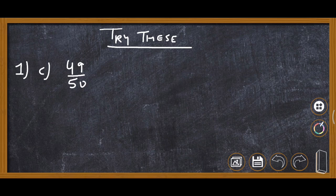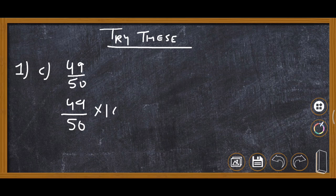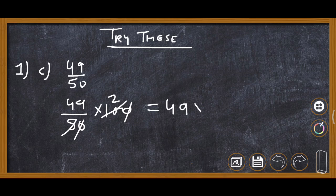Now for 49 upon 50, we are required to convert it into percentage. So 49 upon 50 multiplied by 100. We reduce 100 and 50: 2 fours are 10, so 49 multiplied by 2 gives the answer 98%.